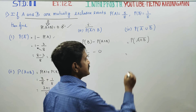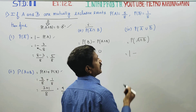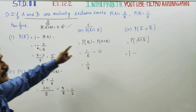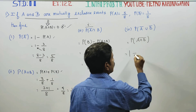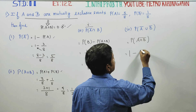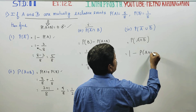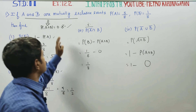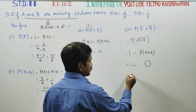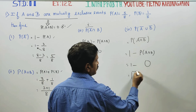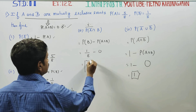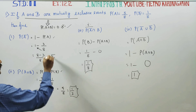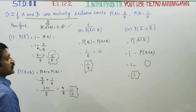This can be written as 1 minus the dash value. Since 1 minus dash equals A intersection B, and A intersection B is 0, the result is 1 minus 0, which equals 1. This is the answer for the 4th part, the 3rd part, the 2nd part, and the 1st part respectively.